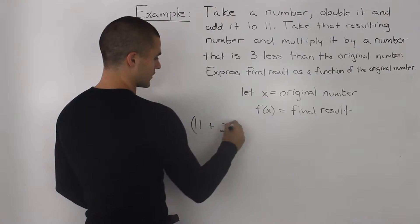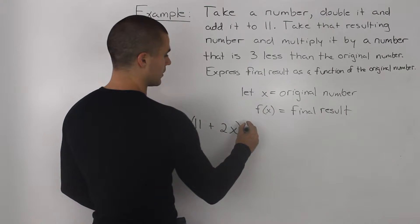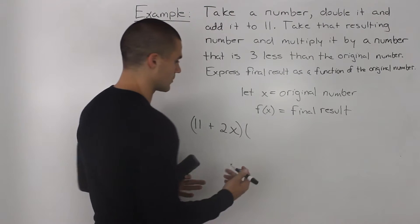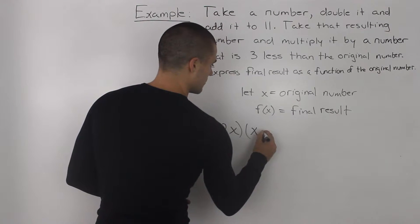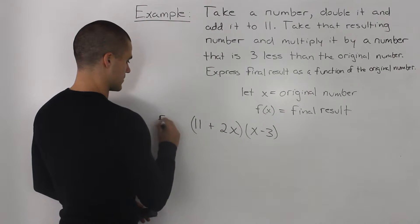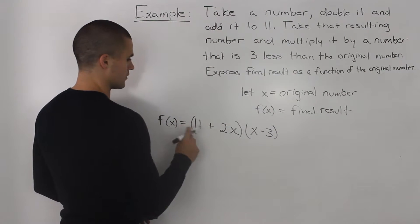Then we take that resulting number and multiply it by a number that is 3 less than the original number, so x minus 3. And that ends up being our final result.